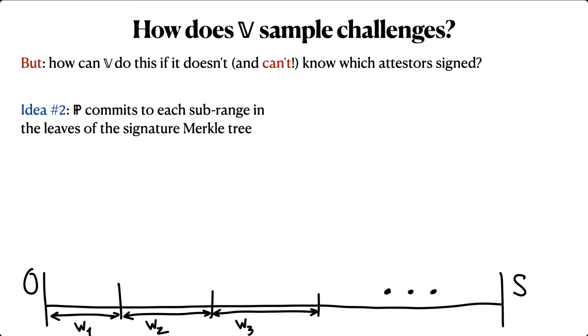The idea is the prover commits to those sub-ranges as part of the signature Merkle tree. Specifically, let's denote the lower end of each attester's sub-range as capital L. So capital L sub 1 is 0, L sub 2 is W1, L sub 3 is W1 plus W2, etc.